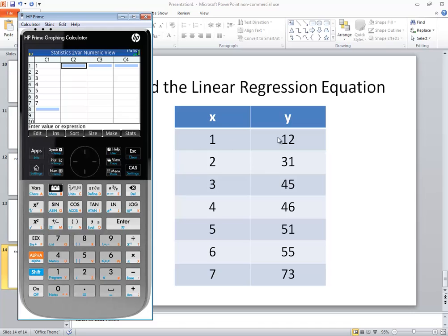I'm going to right arrow over to C2 and put in my y values. So I got 12, 31, 45, 46, 51, 55, and 73. And let me double check my numbers. That looks good.